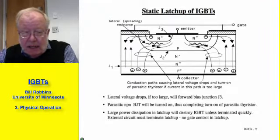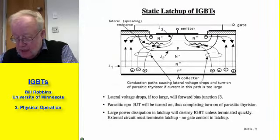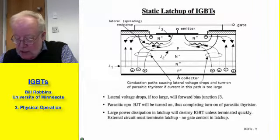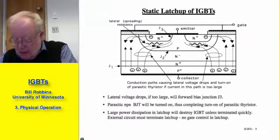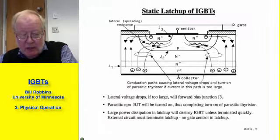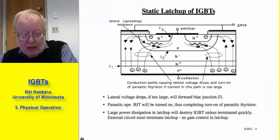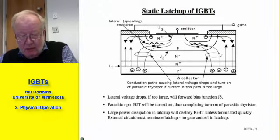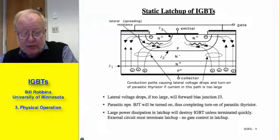Static latch-up occurs when too much current bypasses the channel region, going directly through the body and out the emitter, giving a significant drop across the body region spreading resistance. If that drop gets too large, we forward-bias junction J3 and turn on the parasitic NPN transistor, completing the latch-up of the parasitic thyristor. This gives large power dissipation in latch-up which could destroy the IGBT unless terminated very quickly by the external circuit, since there is no gate control in latch-up.